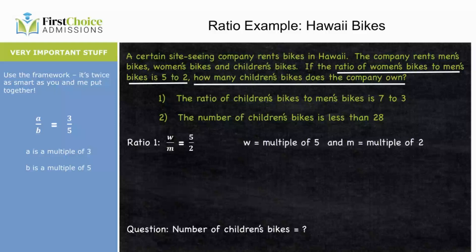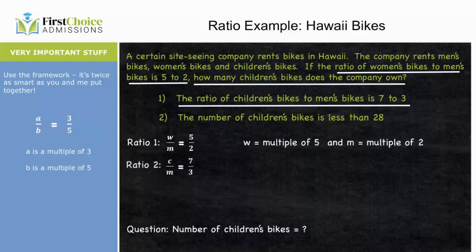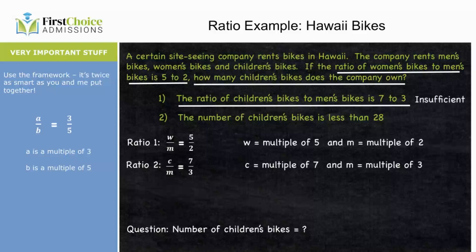Statement 1 tells us the ratio of children's bikes to men's bikes is 7 to 3, meaning c over m equals 7 over 3, so c is a multiple of 7 and m is a multiple of 3. That's not going to be enough — all we have are ratios. We haven't crossed into the land of real numbers; we can make children's bikes almost any number we want. Insufficient.